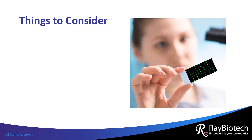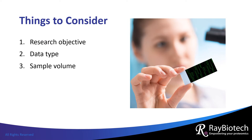When choosing the appropriate array, there are five criteria to consider: your research objective, the type of data you need, how much sample you have, the instruments you have access to, and your budget. We will discuss each in more detail in the following slides.